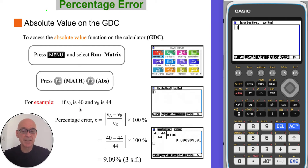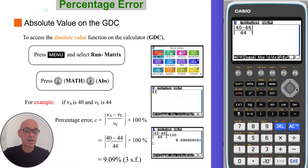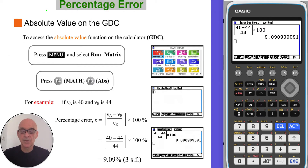If we wanted to work out the percentage error when using an approximate value of 40 as opposed to an exact value of 44, we would type the calculation straight into the calculator. In the numerator put 40 subtract 44, then move the cursor down and put the exact value in the denominator. Press the right cursor twice to move outside the absolute value sign, then multiply by 100 and press Execute, then Decimal Display. The percentage error is 9.09% correct to three significant figures.